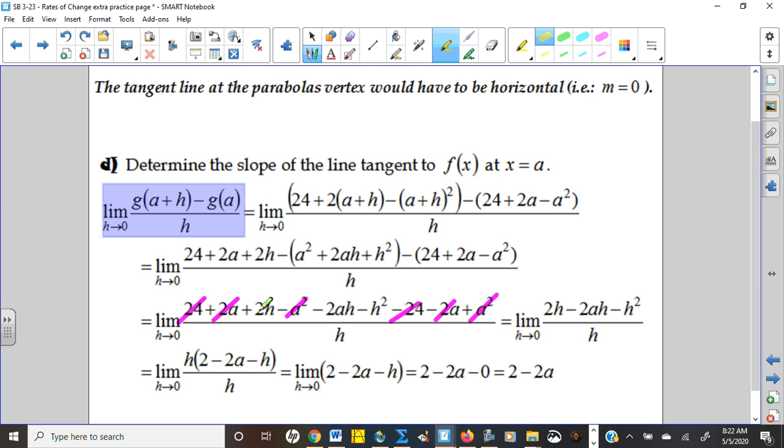So in the end, you only get one, two, three terms left that have H's. So then we can factor that H out and finish the problem. This formula right here is terribly powerful. This is called the derivative of the original function. What it allows you to do is determine the tangent slope at any place.